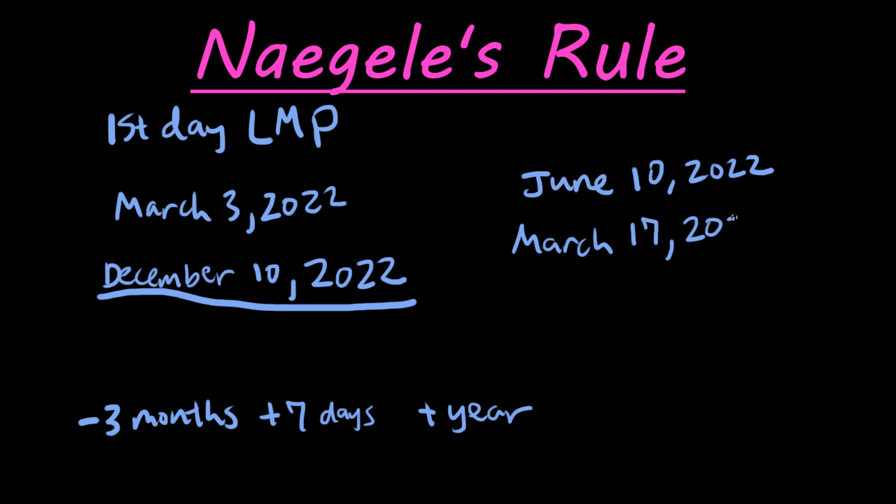For this one, we're going to add a year, and that makes sense — just double check with the pregnancy being about 40 weeks. So March 17th, 2023 would be the estimated delivery date if the first day of their last menstrual period was June 10th, 2022. To remember this: subtract 3 months first, then add 7 days, and sometimes add a year. That's how you get the estimated delivery date using Nagel's rule.